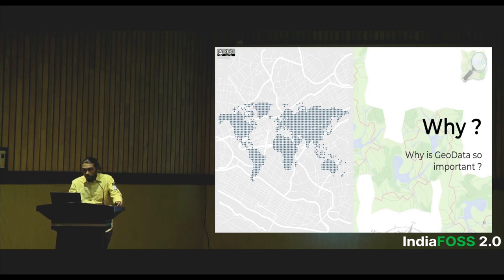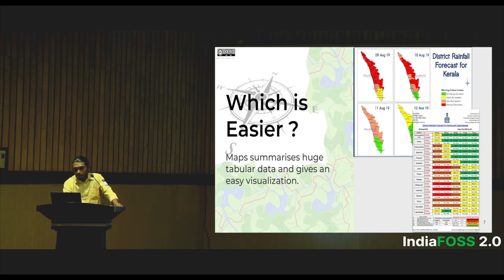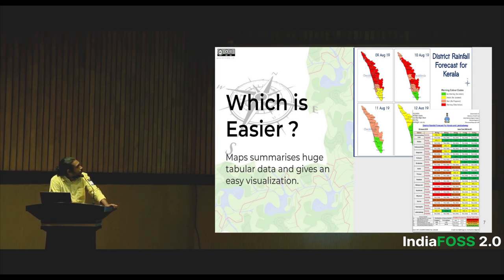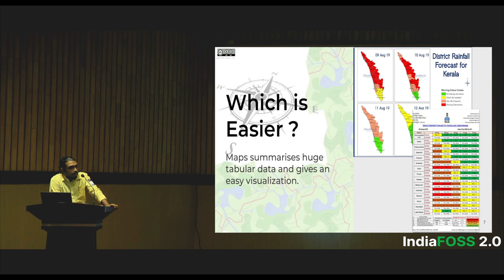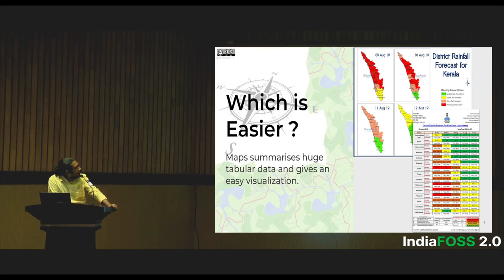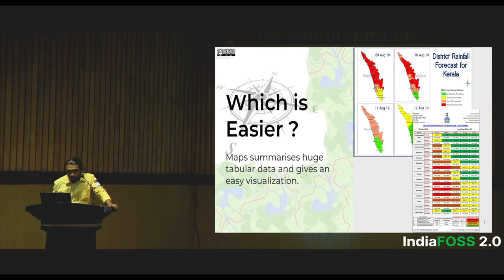Why is geodata so important? Here's an example: the table shown contains the same information I've transformed into a district-wise rainfall forecast map. During 2018 and 2019, Kerala had two big floods. At that time, the IMD gave rainfall warnings in a complicated tabular format — high, low, medium — which was too complex for a normal person to understand. Putting that same information into a map format makes it easier for people to understand at a glance. The geographical component is the district, and you just club the rainfall data layer together with it.